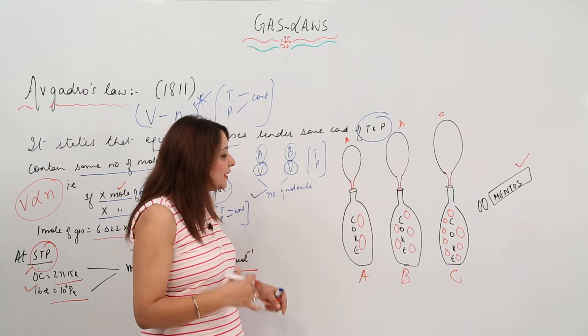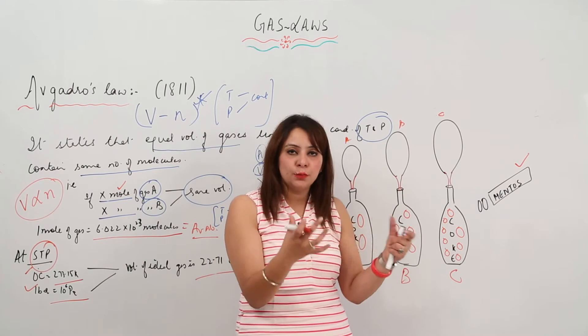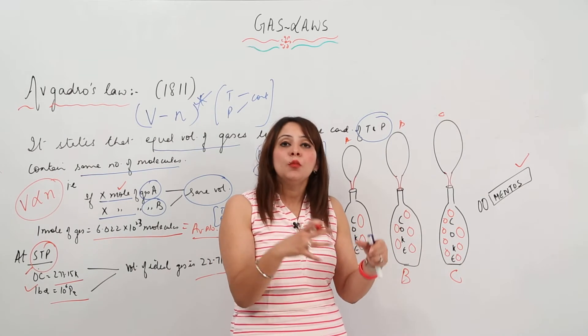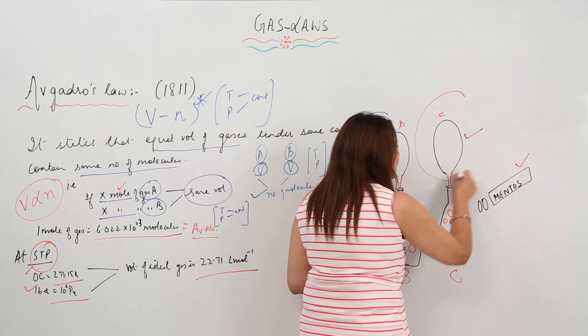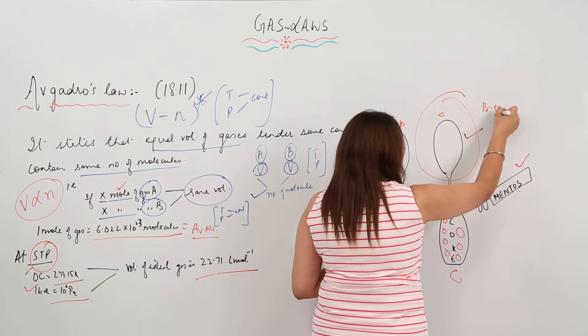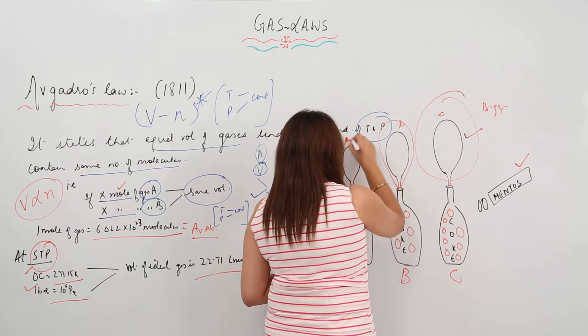The bottle which has more Mentos will react more, more gas will be formed, and more gas will be collected in the balloon. So this balloon will be bigger in size compared to this one, and the smallest will be the one with the least Mentos.